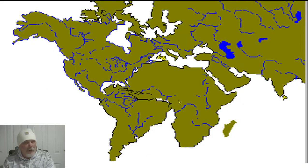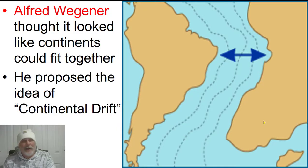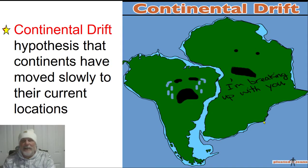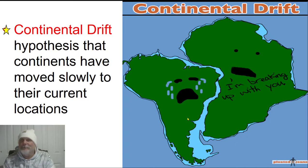And if you push all the other continents together, you might get something that looks like this. Alfred Wegener thought that the continents looked like they could fit together, and he proposed an idea that he called continental drift. It's just like it sounds — continental drift means the continents are drifting. This is a hypothesis that continents have moved slowly apart from each other to their current location. Here you see Africa, here you see South America breaking up.